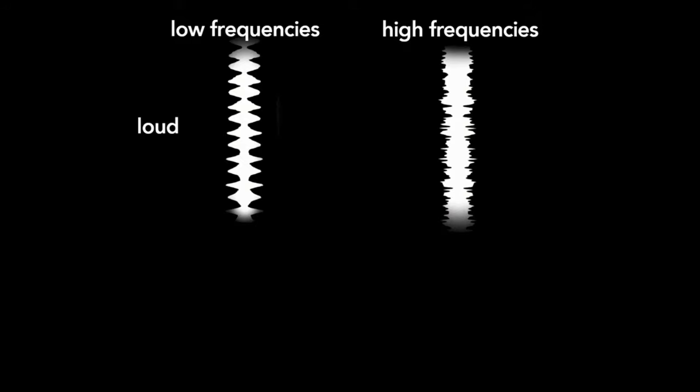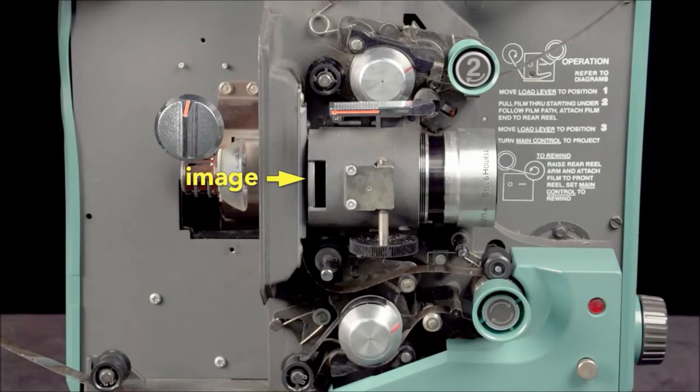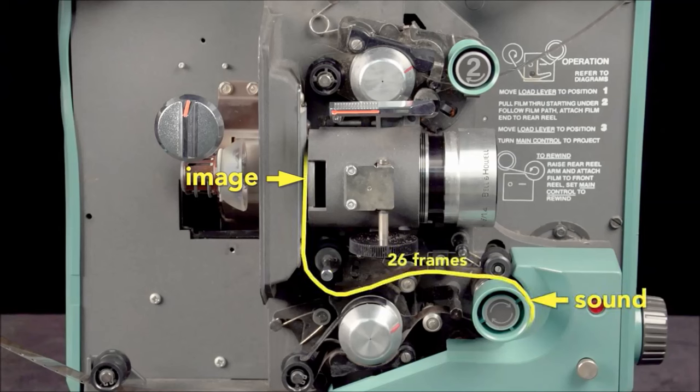Because the image is projected here, and the sound is read down here, the soundtrack is offset 26 frames ahead of the picture in 16mm films. This offset ensures that the picture and sound are correctly synced.